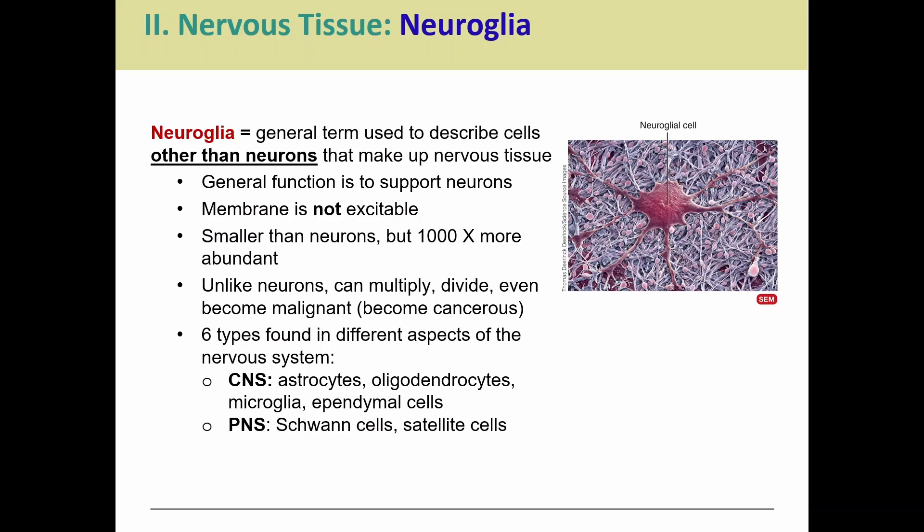Neuroglia are a lot smaller than neurons. If you think back to anatomy when you were looking at tissues — remember seeing a spinal smear — there were those huge neurons and then all these little neuroglia around them. So they're smaller, but they're way more abundant. You're seeing about a nine-to-one or ten-to-one ratio, where for every one neuron you're seeing nine or ten-plus neuroglia.